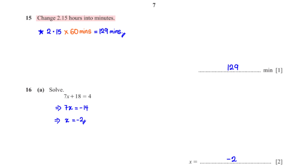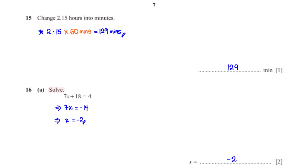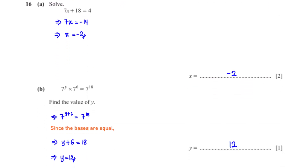Change 2.15 hours into minutes. One hour is 60 minutes, so we multiply 2.15 by 60, which equals 129 minutes. Solve 7x plus 18 equals 4. When we subtract 18 from both sides we have 7x equals negative 14. Dividing both sides by 7 gives x equals negative 2.